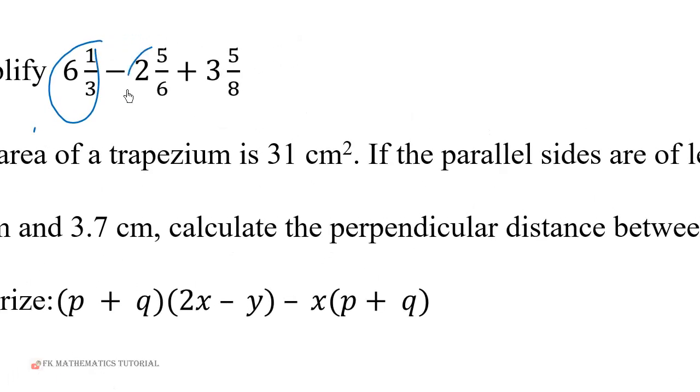With this first one, you have to convert these numbers to improper fractions. So 6 times 3 will give you 18 plus 1, which is 19 over 3. 2 times 6 gives you 12 plus 5, which is 17 over 6. Then 3 times 8 will give you 24 plus 5, which is 29 over 8.